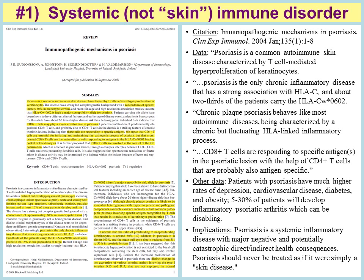By looking at these cells under the microscope and understanding how they interact, researchers are better able to understand psoriasis as an immune disease, not simply a dermatologic or skin disease. Other data — familiar to many of us — shows that patients with psoriasis have much higher rates of depression, cardiovascular disease, diabetes, and obesity. Between 5% and 30% of patients with psoriasis will develop an inflammatory arthritis, which can be disabling and is often very similar to rheumatoid arthritis.